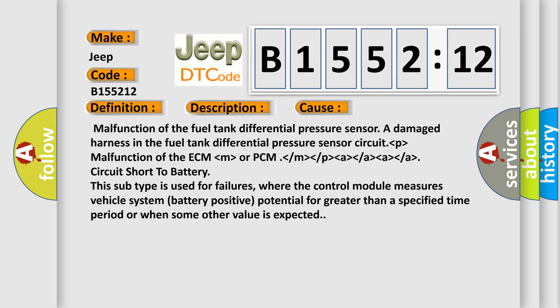This diagnostic error occurs most often in these cases: malfunction of the fuel tank differential pressure sensor, a damaged harness in the fuel tank differential pressure sensor circuit, malfunction of the ECM or PCM. Circuit short to battery. This subtype is used for failures where the control module measures vehicle system battery positive potential for greater than a specified time period or when some other value is expected.